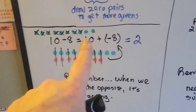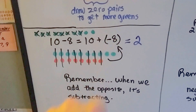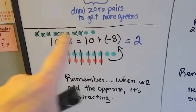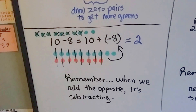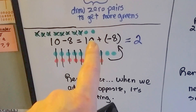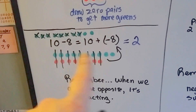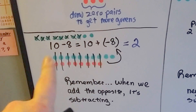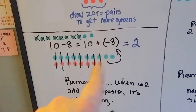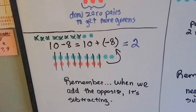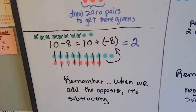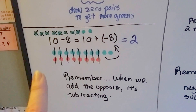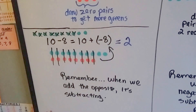10 minus 8 is the same thing as 10 plus negative 8. If we've got 10 green positive ones and we take 8 of them away, we're going to have 2 left. If we have 10 green positive ones and we add 8 negative ones, the 8 negative ones are going to cancel out 8 positive ones and we're left with 2 positive ones. So remember, when we add opposites, it's subtracting.